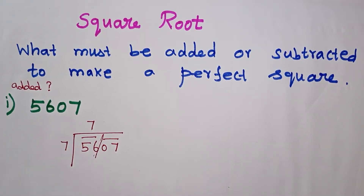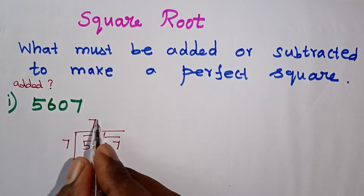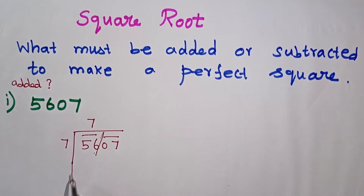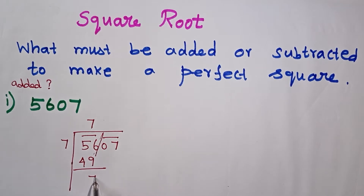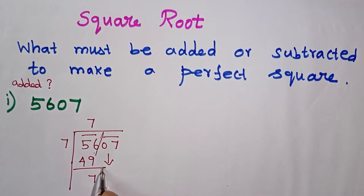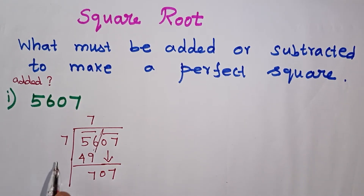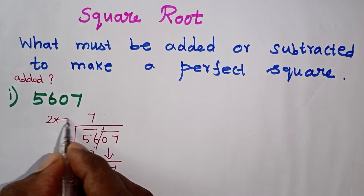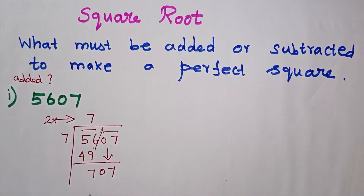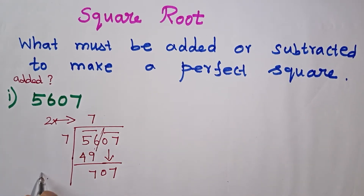This is a long division for square root. We have two number pairs. 7×7 is 49, so 56 minus 49 gives remainder 7, and we bring down the next digits. The quotient so far is 7, and we continue the long division process. 2 into 7 is 14.